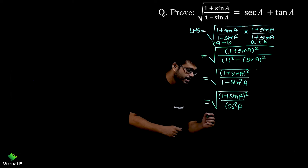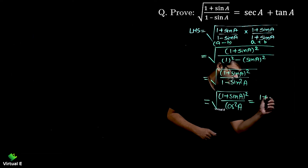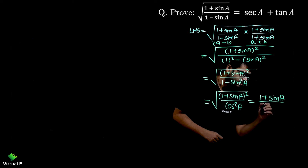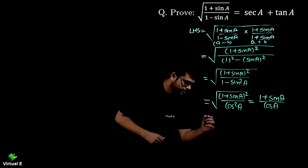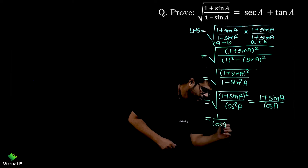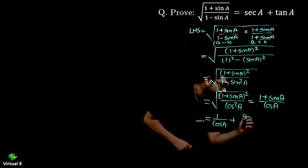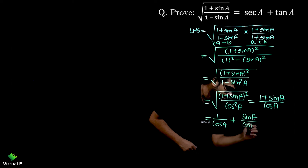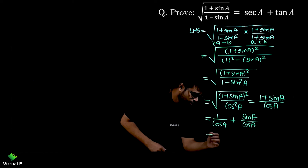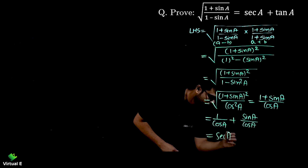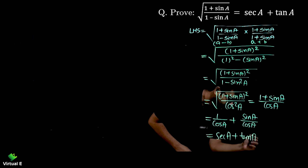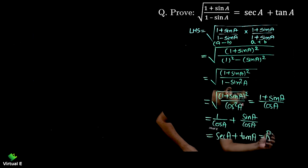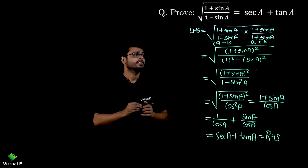Now let's remove the square root. The numerator is a perfect square so (1 + sinA)² becomes (1 + sinA), and cos²A becomes cosA. So we have (1 + sinA) / cosA. Dividing individually: 1/cosA + sinA/cosA = secA + tanA, which is our RHS.